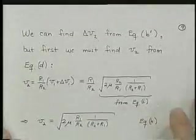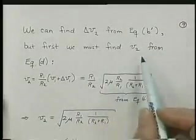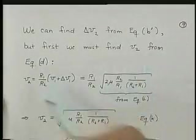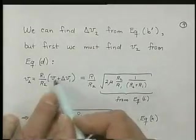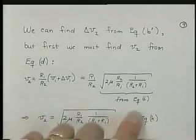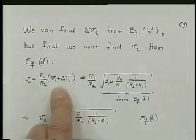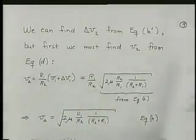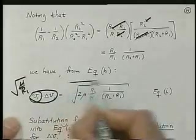So let's go to page 9. We can find delta V2, the circularizing burn, from equation B prime, but first let's solve for V2 itself. From equation D, we had V2 was R1 over R2 times the quantity V1 plus delta V1, and in equation I, we had already solved for V1 plus delta V1. Let me just point that out to you here. Here is that total.